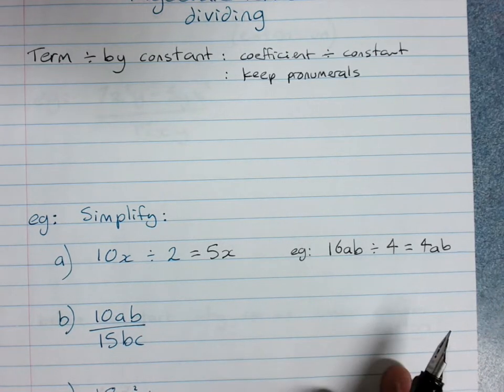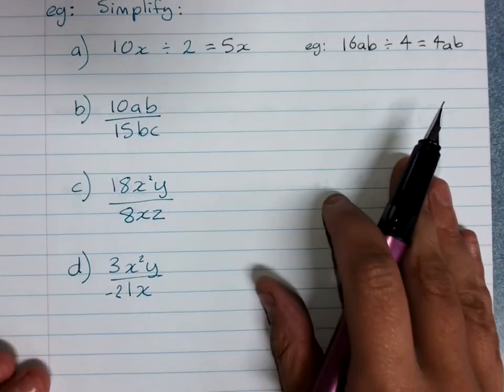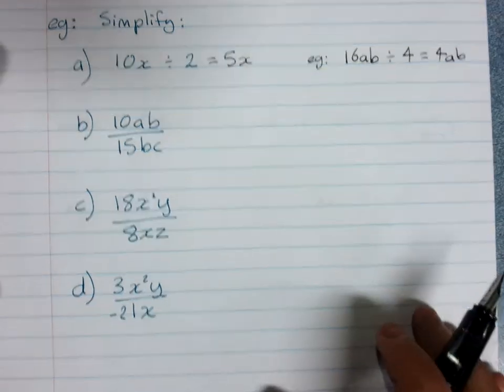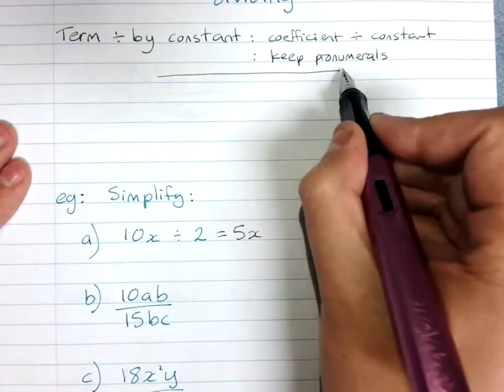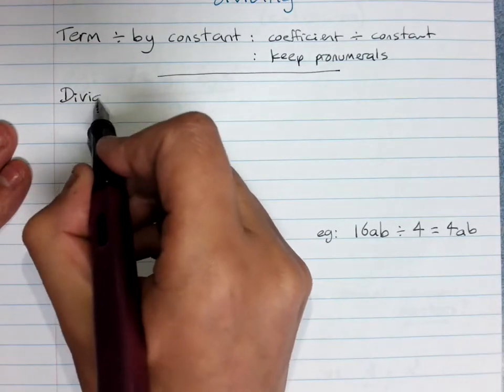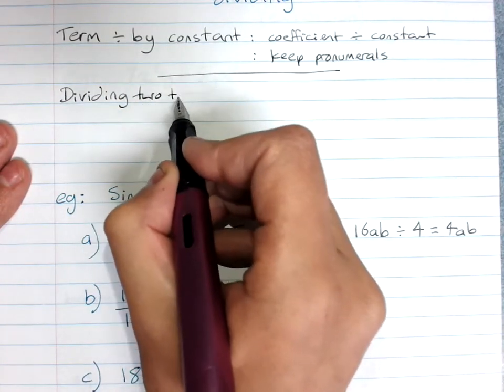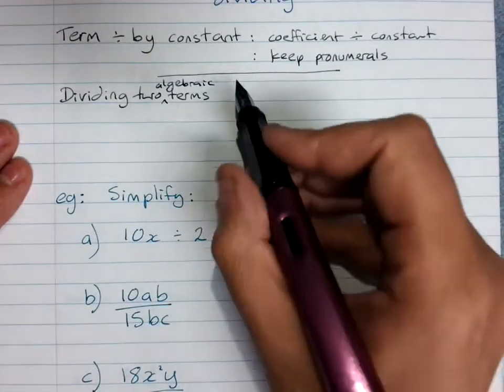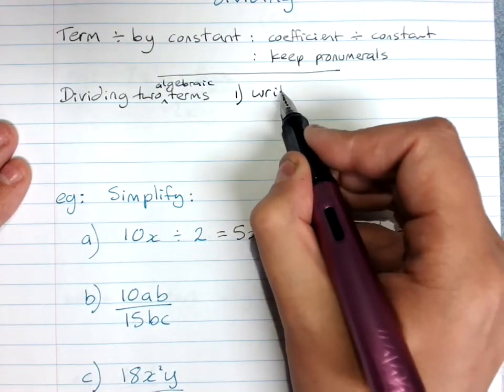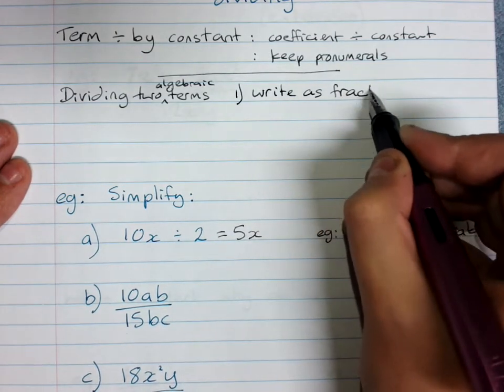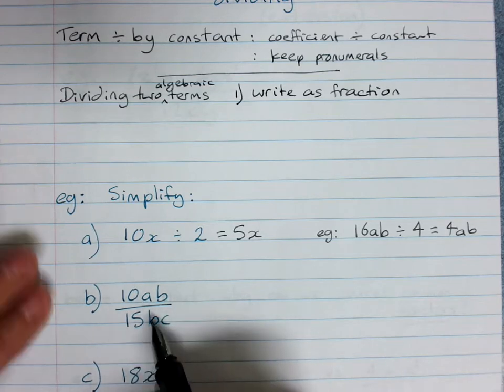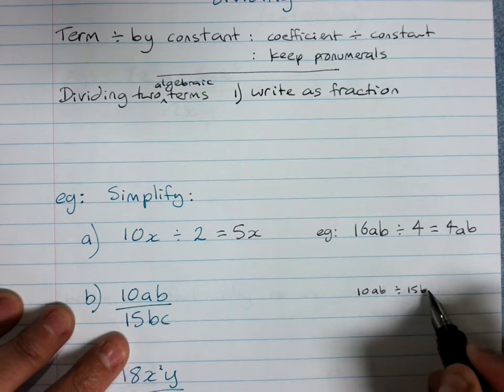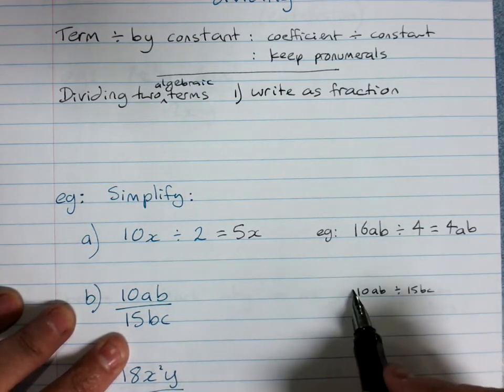But if it's more complicated where it's a term divided by another term, so dividing two terms or algebraic terms, always write it as a fraction. So even if this question was written as 10ab divided by 15bc, you'd say nope, write it as a fraction. It will be much easier.